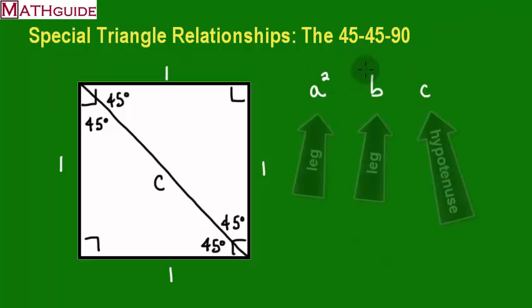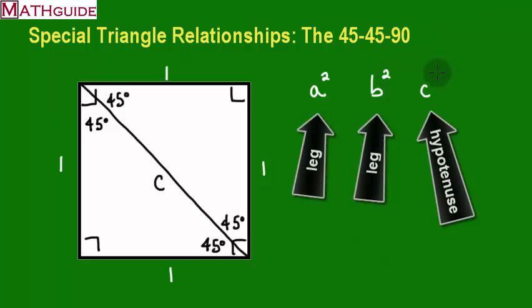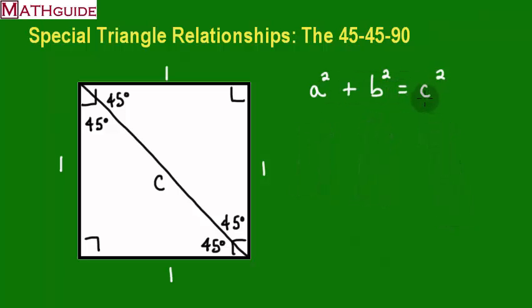If you square the legs and you square the hypotenuse, if you add the squares of the legs, it's equal to the square of the hypotenuse. We all know that the legs here are one, they're each one, so A is one, B is one, we just don't know what C is. So we're going to calculate C.